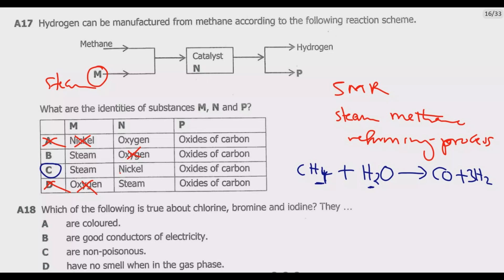Question A18: which of the following is true about chlorine, bromine and iodine? A, they are colored. So A is correct. Why? Chlorine, bromine and iodine are all elements in the halogen group of the periodic table and they are all colored elements.